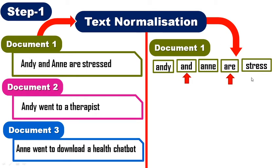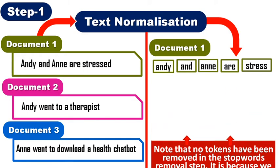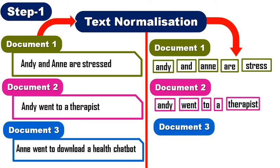Stop words are not removed here because when information is in very little quantity — one sentence per document — the stop words have almost the same occurrence count as other words. For example, 'stressed' has one occurrence and 'and' also has one occurrence. Since their frequency is almost the same as other words, they cannot be said to have lesser value, and that's why these stop words are not removed. This way we get all the normalized tokens.